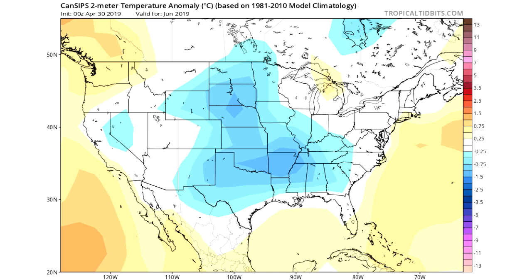First we're looking at the CANSIPS, the Canadian seasonal model. You can see they're calling for colder conditions in the central United States. There's a little bit of cold in California and Nevada, but that's not too big of a deal. We do see some warm for the northwest and some of the southwest, and up against the east coast there's a little bit of warm. So they're calling for slightly colder conditions than what I'm calling for, but they definitely see colder conditions in the central United States and warmer conditions for the two coasts.